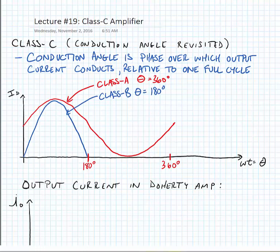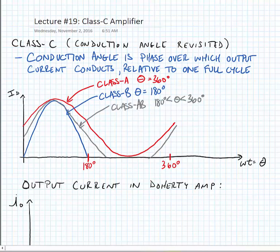The Class-AB is somewhere between Class-A and B, and finally we have the Class-C, which has a conduction angle that's between 0 and 180 degrees.